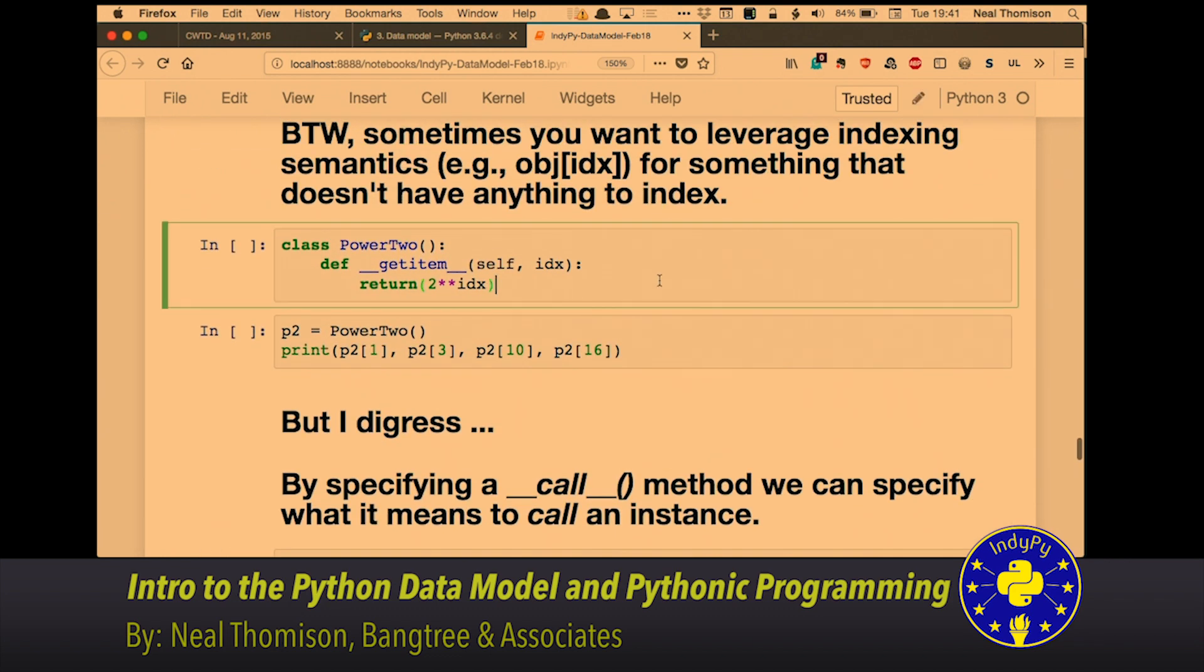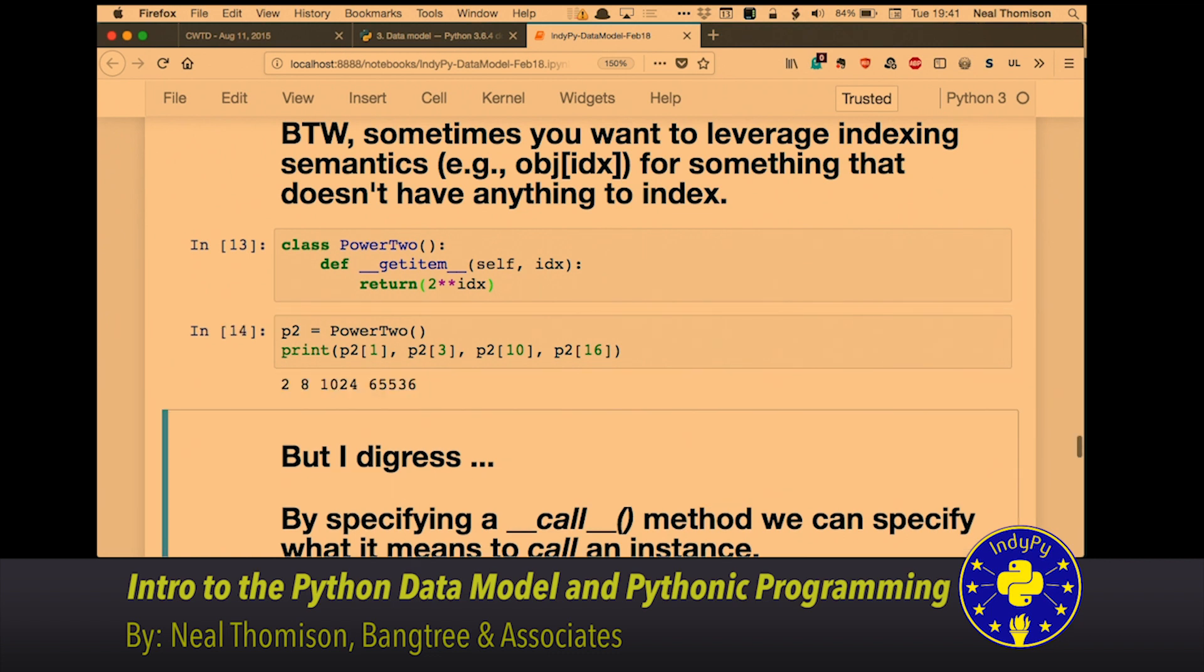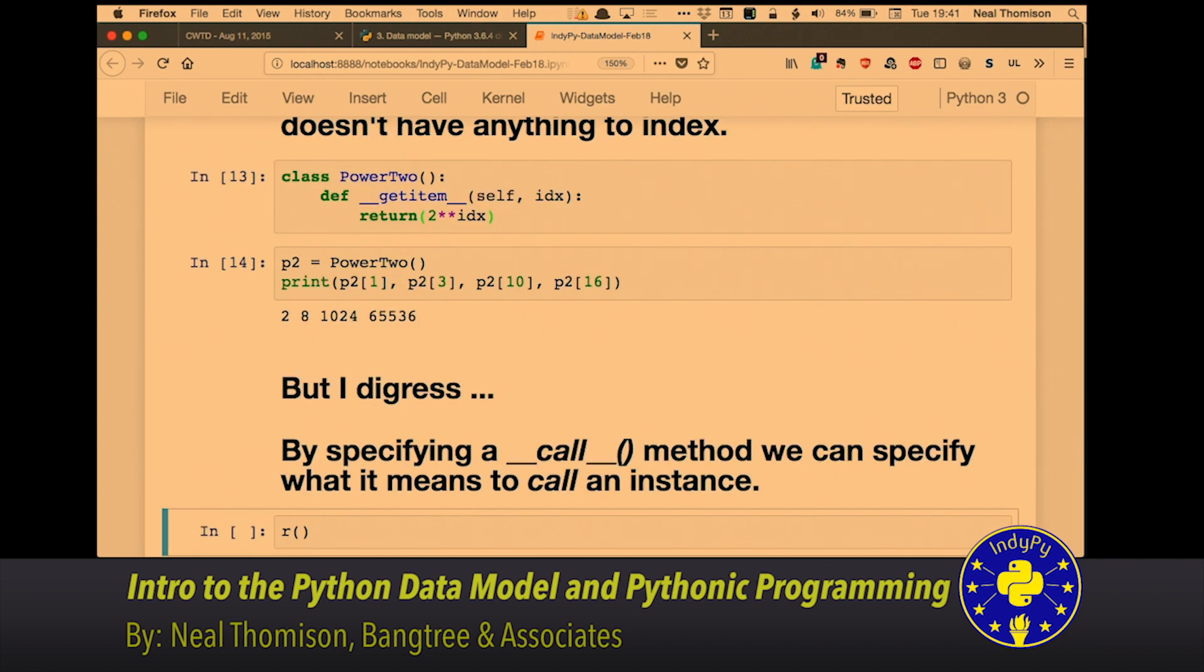Here's an example of basically using that notion of indexing, but actually providing a computation. Here's a simple function, power of two. Basically, you give me an index, I'm going to give you a power of two back. Here, I'm going to make one of those objects, and then print a handful of them. So, you see that p2 is the object from power two that I made, and I indexed it with one. Two to the first is two. Two to the second, or two to the third is eight. Print them all out across there. So, you can actually do things that are fairly complicated in using the semantics of indexing to make some kind of cool things.